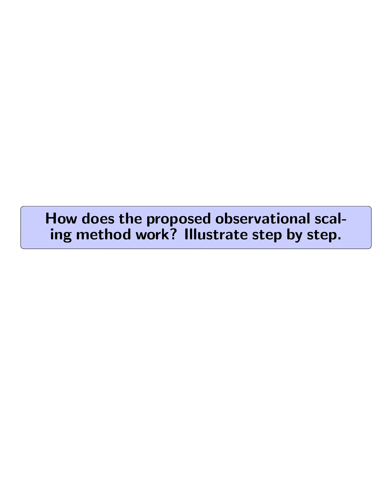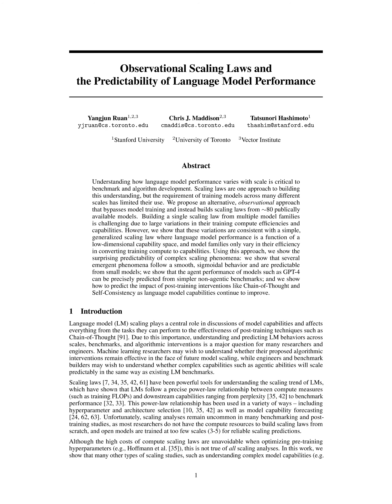How does the proposed observational scaling method work? The proposed observational scaling method works by first extracting a low-dimensional capability measure for language models from observable benchmark performance. This capability measure is obtained through principal component analysis (PCA) on a matrix of benchmark metrics for a broad set of models.